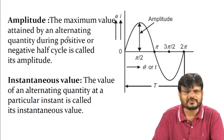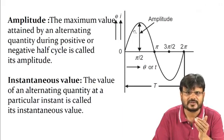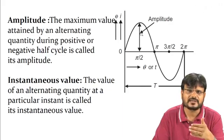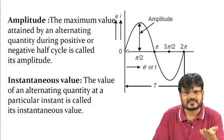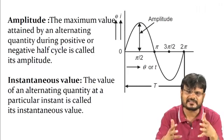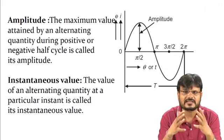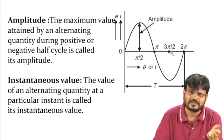Amplitude is the maximum value attained by an alternating quantity during the positive or negative half cycle. The maximum value occurs at ωt = π/2. It is denoted as Vm for voltage or Im for current. This maximum value on the positive side and the negative side has the same magnitude, but the direction may change.